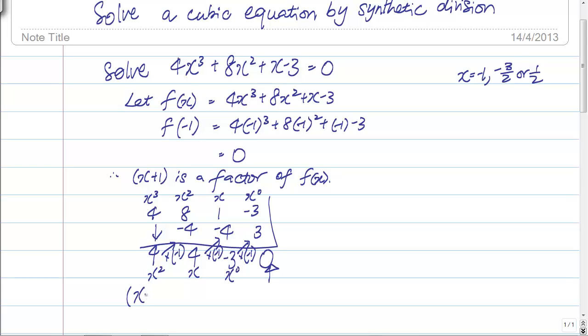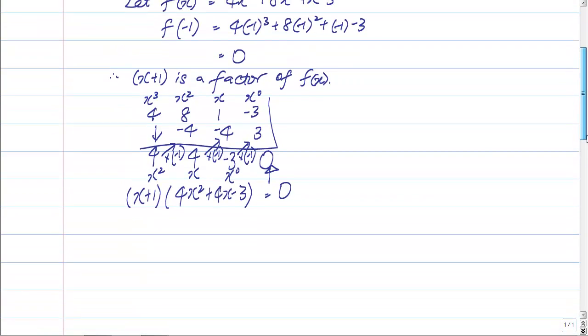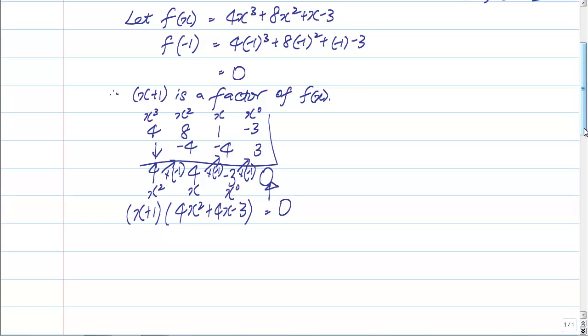Since we have the first factor, which is x plus 1, the quadratic factor is found out to be 4x squared plus 4x minus 3 equals to 0. To carry on solving this equation, I will be factorizing my quadratic factor here using the simple cross method. This will be 2x here, 2x, a 3, a 1, a minus sign here.